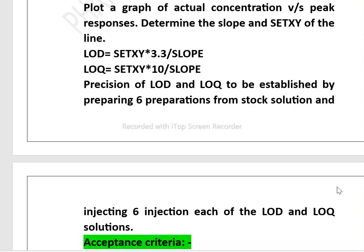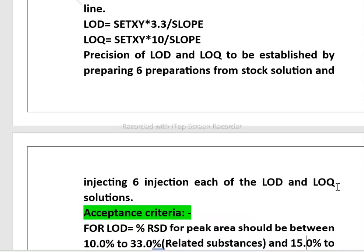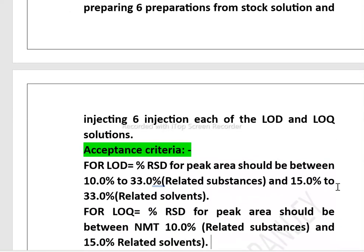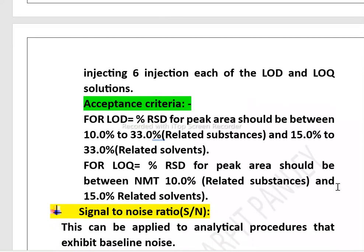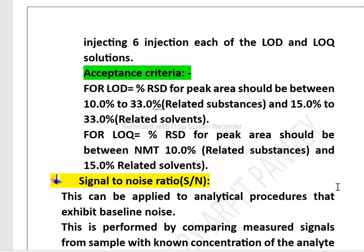For LOD/LOQ preparation, the acceptance criteria for LOD — the percentage RSD for peak area — should be between 10% to 33% in the case of related substance, and 15% in the case of related solvent.